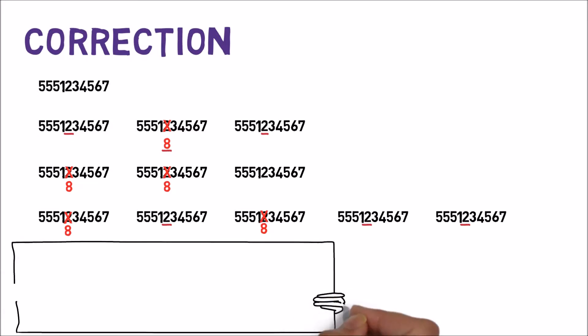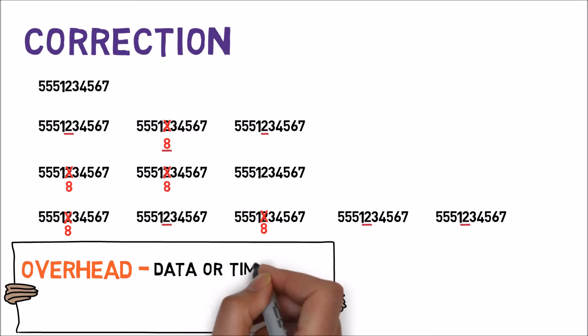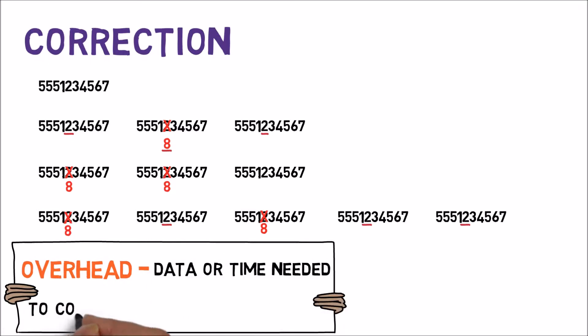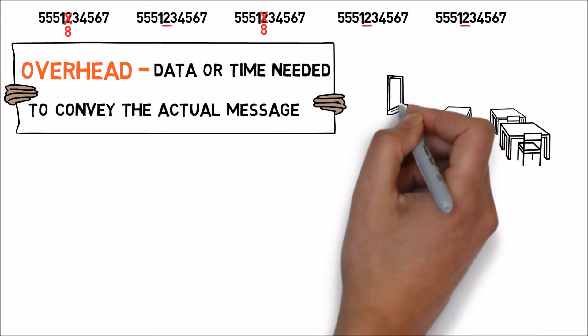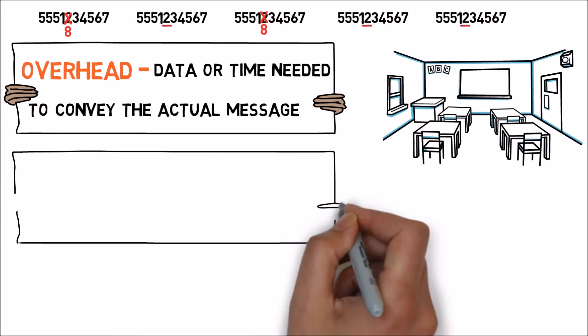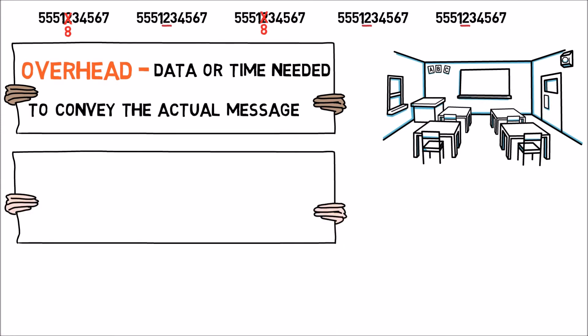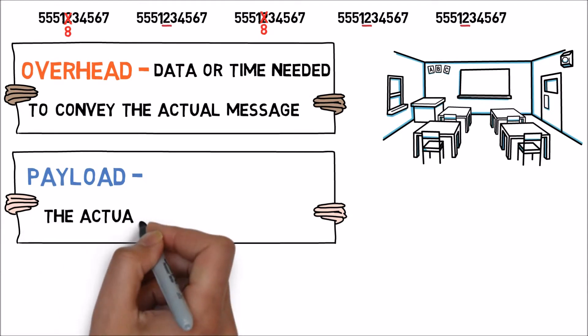Now would be a good time to introduce the term overhead. When we say overhead, we basically mean data or time needed to convey the actual message. Let's first understand what this term means in general, and then consider it in the context of handling errors. Let's say that I have a lesson to teach in my local university. My goal is to teach the lesson itself, which is also called the payload in that context. That is the actual data or message I'd like to convey.